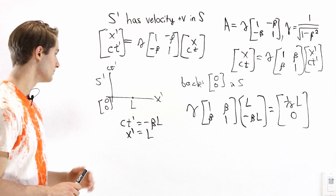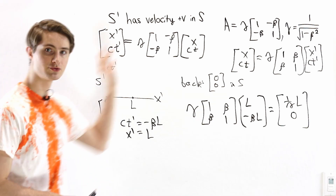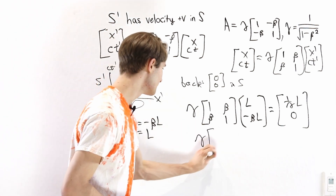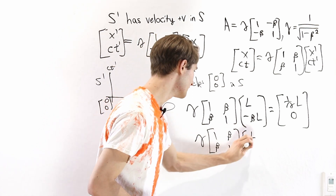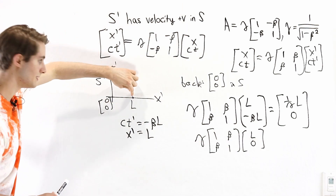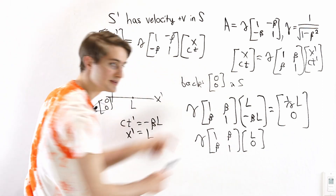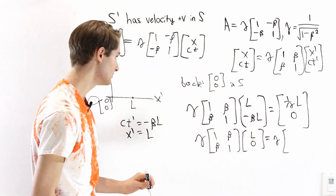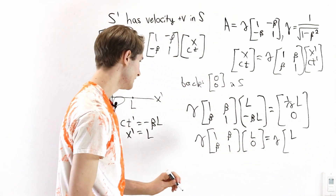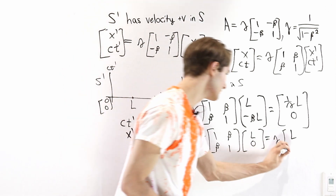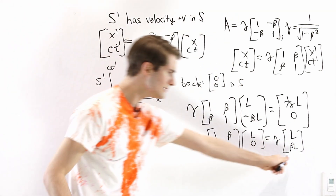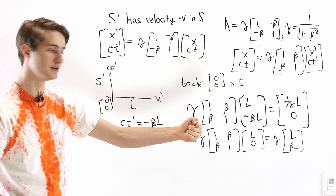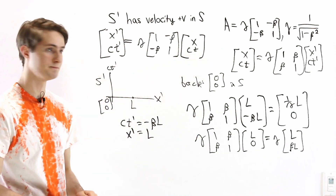One question you might ask is: why can't we just use CT' equals 0 instead, transform that back to S? Let's see what happens. Gamma times 1, beta, beta, 1 times L, 0. We get gamma out front, with L on top, and beta L on the bottom. Notice time is not 0 anymore — this event actually happens later in S, whereas in S' they both happen at the same time. In either case, we see events simultaneous in one frame are not simultaneous in the other frame.